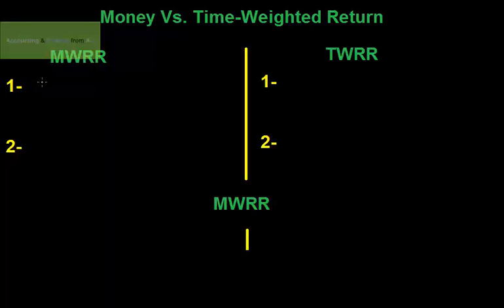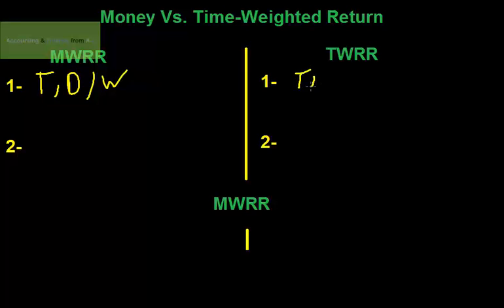The first difference is that the money weighted rate of return is affected by the timing of deposit or withdrawal of cash flows. In contrast, the time weighted rate of return is not affected by the timing of deposit or withdrawal of the investment or cash flow.